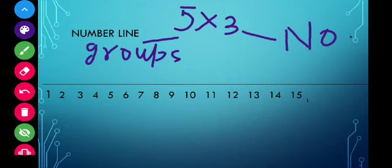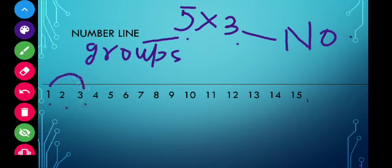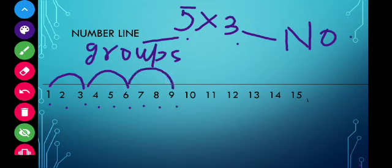To solve five multiplied by three on the number line, you need to take five jumps and skip three numbers each time. First jump: skip one, two, three. Second jump: skip one, two, three. Third jump: skip one, two, three. Fourth jump: skip one, two, three. Fifth jump: skip one, two, three.